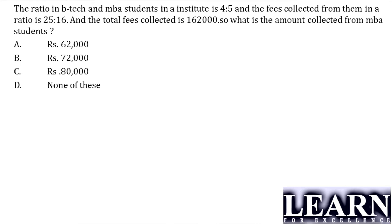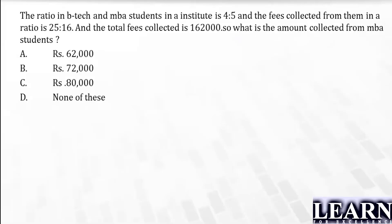Now, how can you decide what is the amount collected? If I multiply the number of students with the fees, I can find out what is the total fees collected. They have given two ratios — the ratio of the number of students and the ratio of the fees.